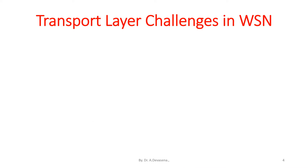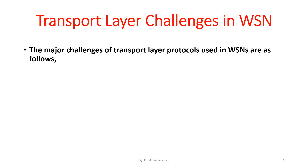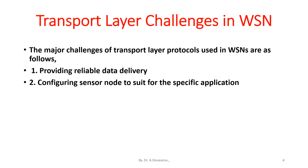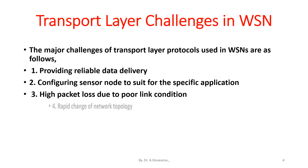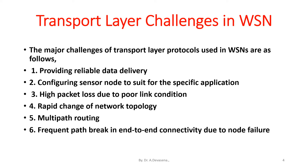Transport layer challenges in wireless sensor networks. The major challenges of transport layer protocols used in wireless sensor networks are as follows: First, providing reliable data delivery. Second, configuring sensor nodes to suit specific applications. Third, high packet loss due to poor link conditions. Fourth, rapid change of network topology. Fifth, multipath routing. Sixth and seventh, frequent path breaks in end-to-end connectivity due to node failure, and end-to-end error recovery.